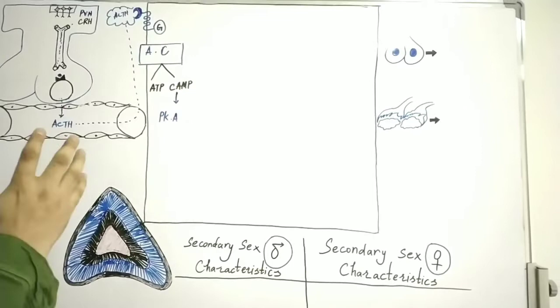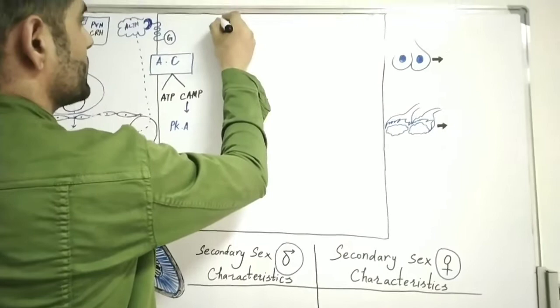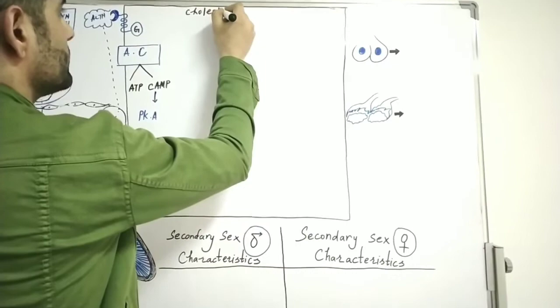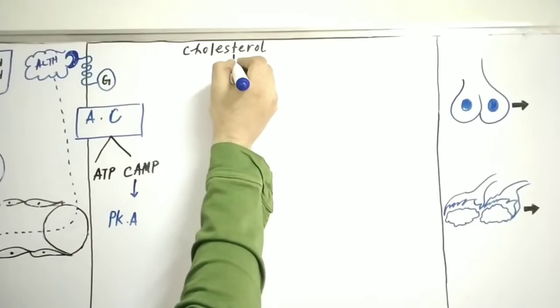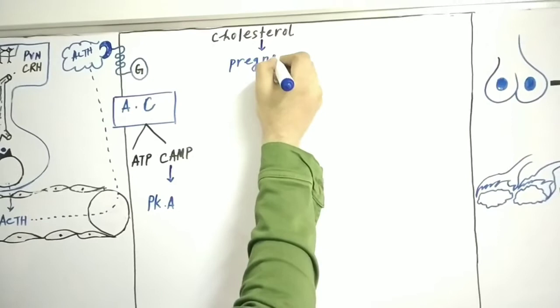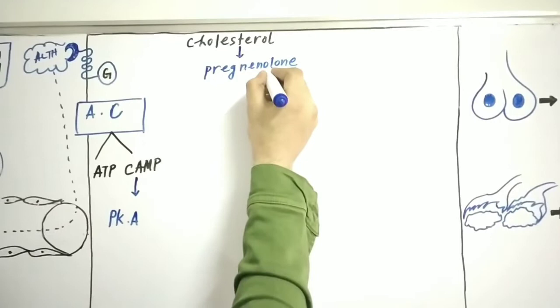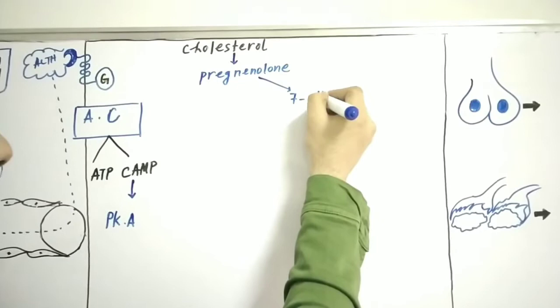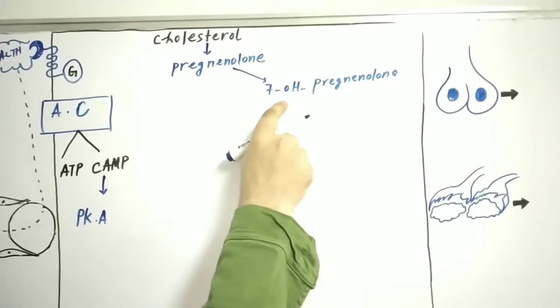We know that sex corticoids — or gonadocorticoids — are steroid hormones, and they are synthesized from cholesterol. From cholesterol, there is the formation of pregnenolone. From pregnenolone, there is the formation of 17-hydroxypregnenolone. Remember: pregnenolone can either be converted into 17-hydroxypregnenolone or into progesterone.